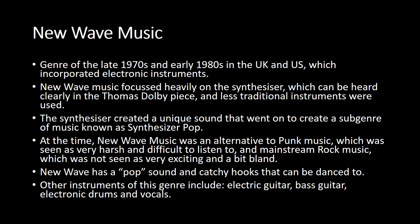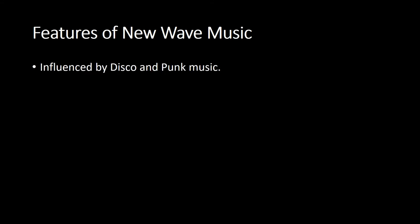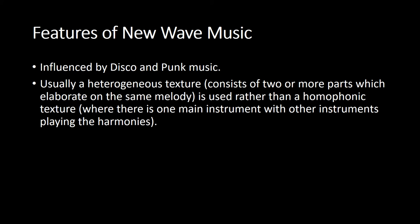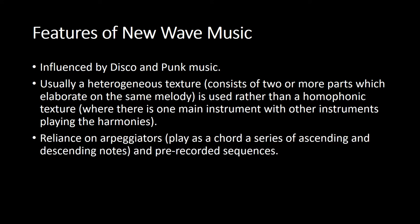Other instruments of this genre include electric guitar, bass guitar, electronic drums and vocals. New Wave Music was influenced by disco and punk music. It usually features a heterophonic texture, consisting of two or more parts which elaborate on the same melody, rather than a homophonic texture where there is one main instrument with other instruments playing the harmonies. There is also a reliance on arpeggiators — playing a chord with a series of ascending and descending notes — and pre-recorded sequences. The timbre sounds clean and bright.